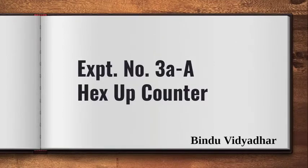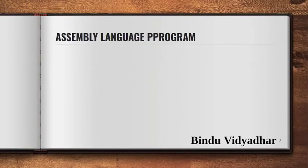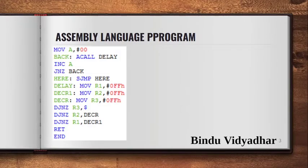Hello everyone, this is a video to explain the hexadecimal up counter which starts from 0 and counts up to FF. The assembly language program is the same as the hexadecimal down counter in my previous video with only a few changes.